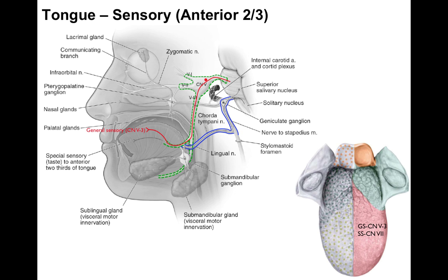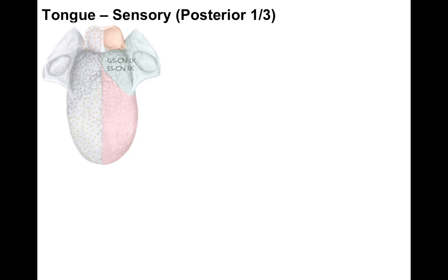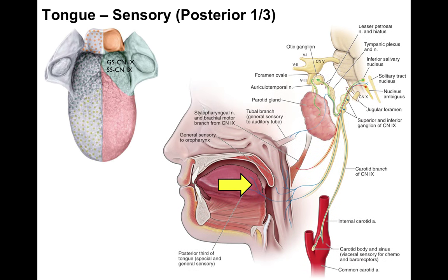Now in blue is our chorda tympani nerve. Special sensation for taste via cranial nerve 7 travels in the chorda tympani nerve, hitchhikes on the lingual nerve for a while, then jumps onto the chorda tympani and goes back to the pons. Now the posterior third of the tongue: general sensation is cranial nerve 9, and special sensation is also cranial nerve 9. General and special sensation from the posterior tongue and oropharynx go back via cranial nerve 9 to the medulla.